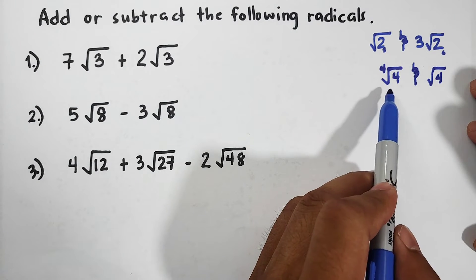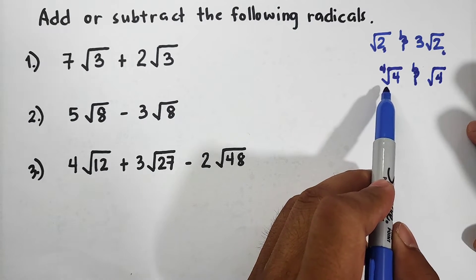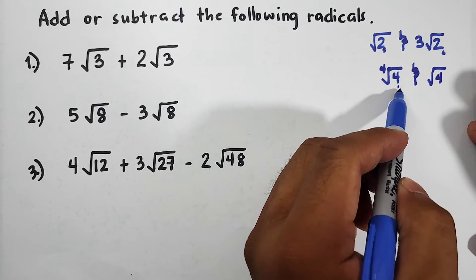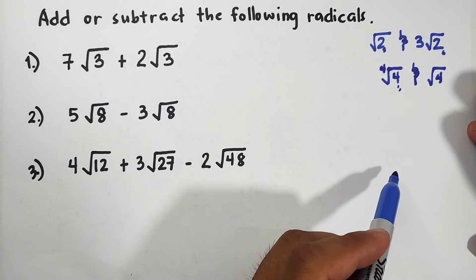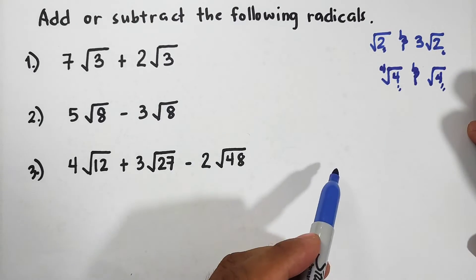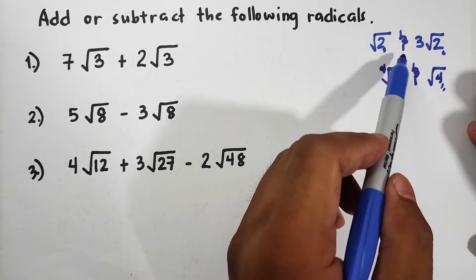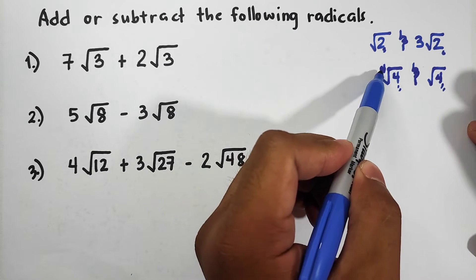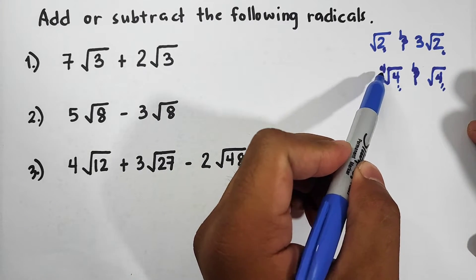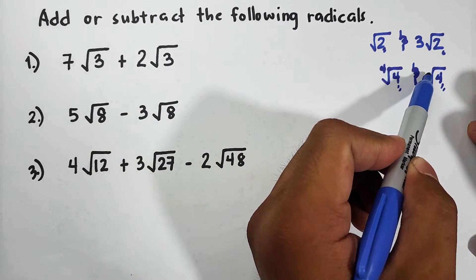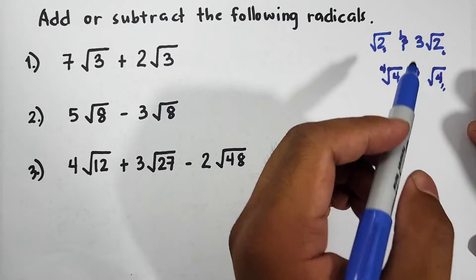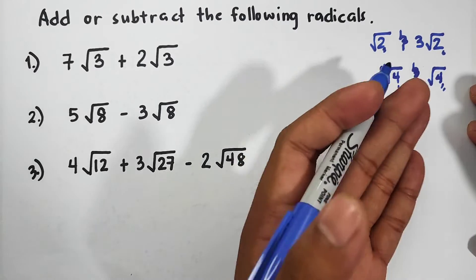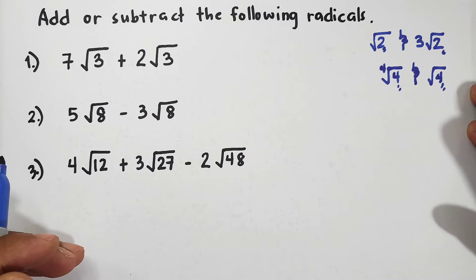We have the fourth root of 4 and the square root of 4. Though their radicands are both 4, their indices are different — here the index is 4, and here the index is 2. So we will NOT be able to add or subtract these radical expressions.